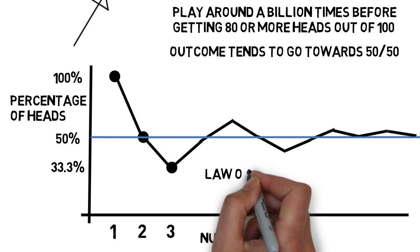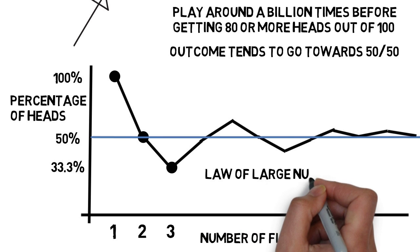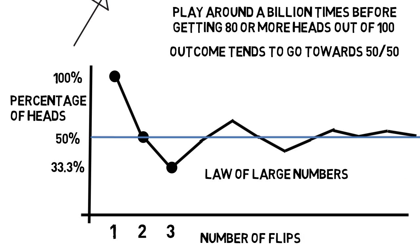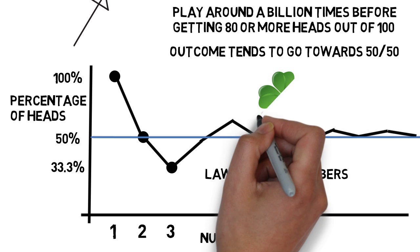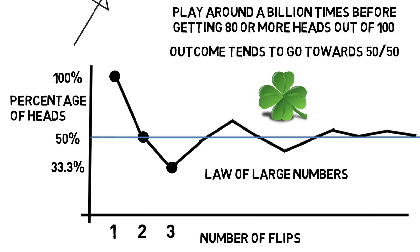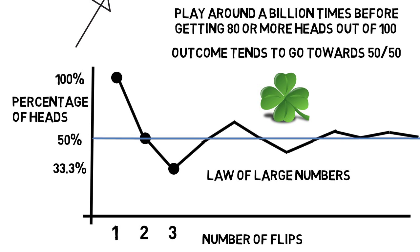This is known as the law of large numbers. Large numbers of trials tend toward the expected value, while a small number of trials are much more affected by luck of the draw and randomness. If you were to flip a coin a million times, you'd need an insane amount of trials before you'd land even 60% heads.